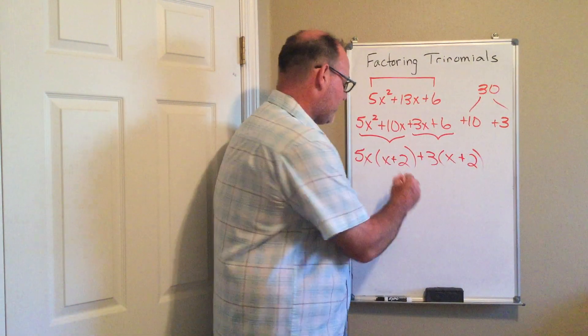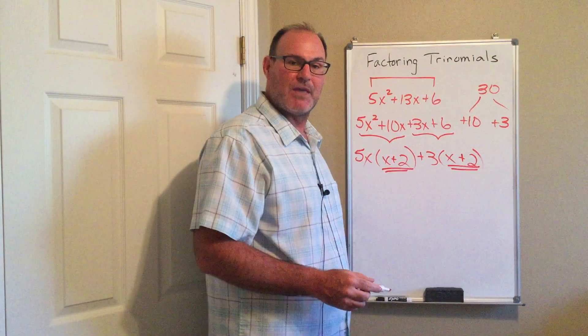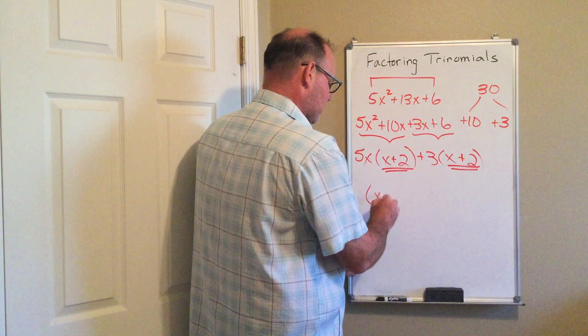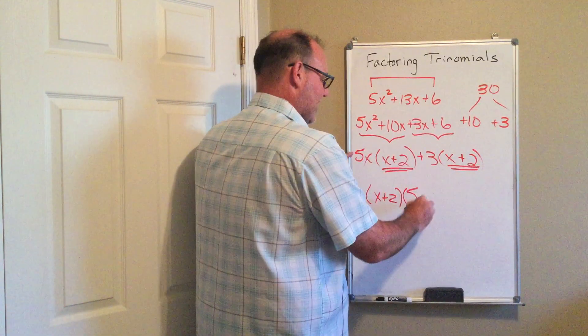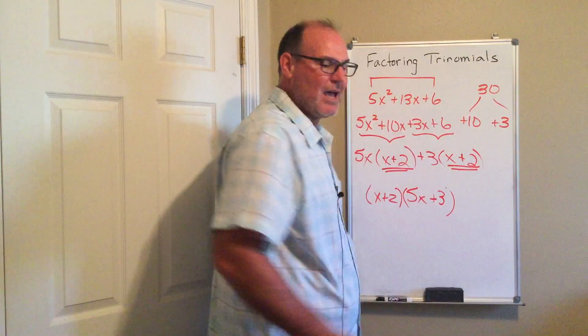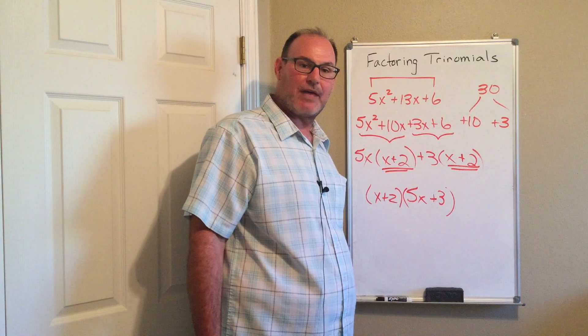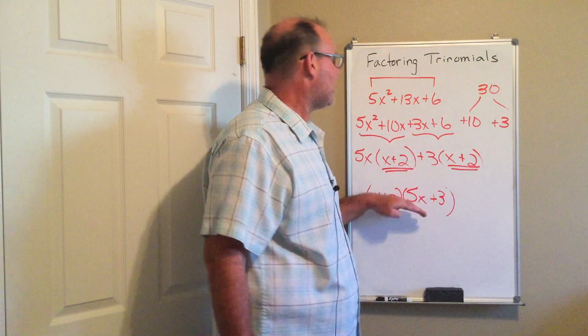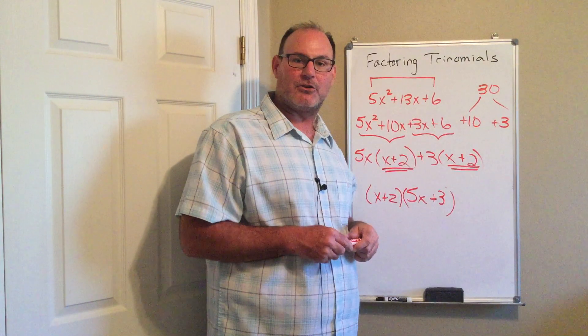The grouping did work. The way I know that is I have the exact same thing in the parentheses, so I will factor out that x plus 2, and what I'm left with from the first term is 5x. What I'm left with from the second term is plus 3. As always with factoring, you can multiply your two binomials together, and once you're done FOILing it, you will get the trinomial that we started with. And there is my factored expression.